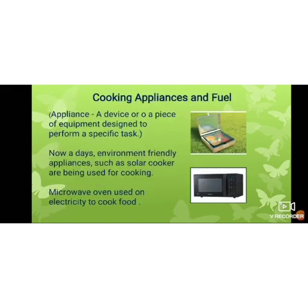The next one is known as a solar cooker. It uses solar energy, meaning direct sunlight, to cook food. And the last one is a microwave oven. It works on electricity, which helps in baking, cooking, and grilling food.